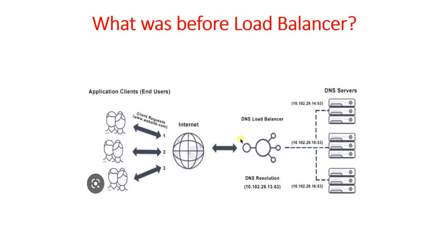So at times it may direct traffic toward servers that are inaccessible or down. When end users query any request by typing a domain name, the DNS load balancer will resolve the query, but it doesn't have visibility into those servers. There is a high possibility that even if a server is down, it will still try to reach it, since the DNS acting as a load balancer doesn't have insights into the health of that particular server, potentially causing errors or outages.